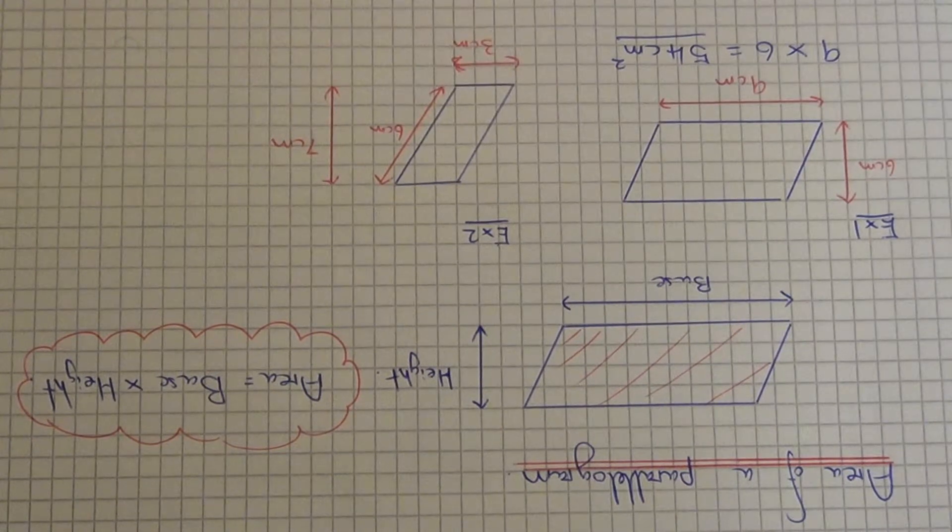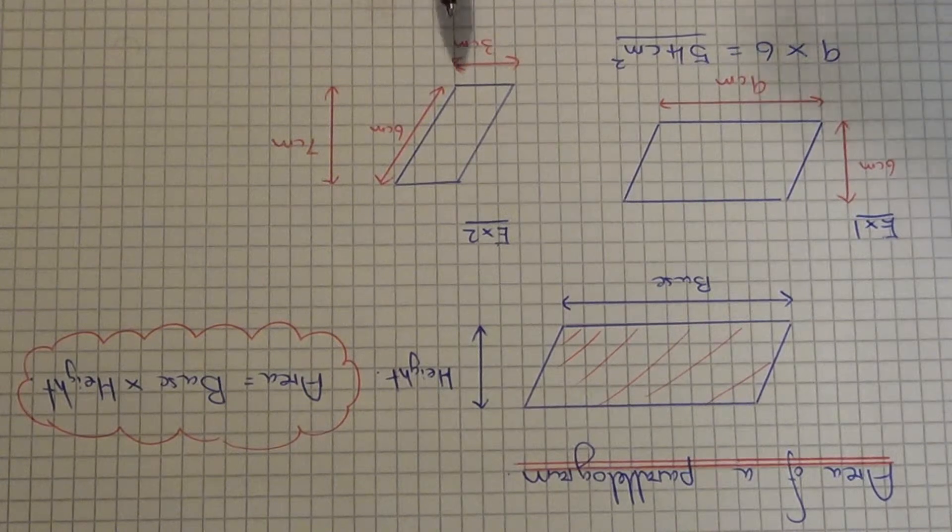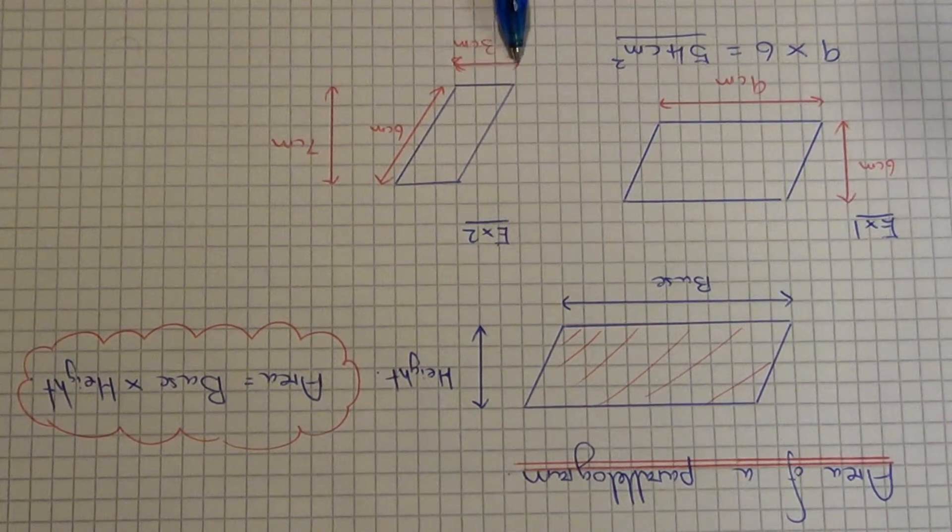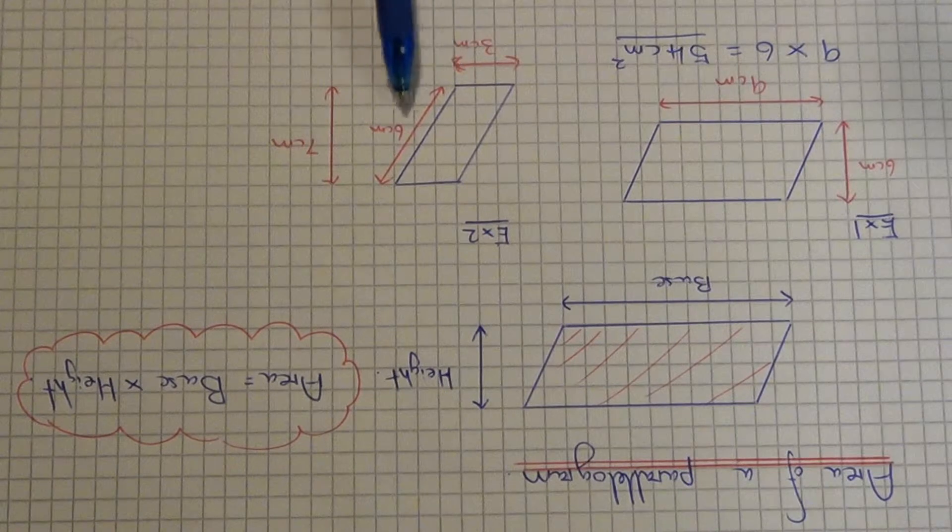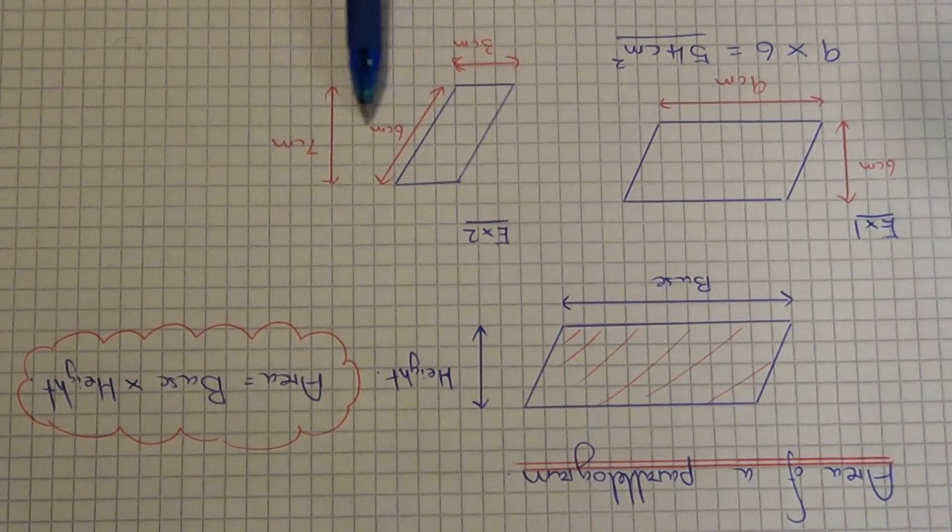So let's move on to example two. On this one I've tried to catch you out a little bit because the base length is three and I've given you two heights. One is six and one is seven.